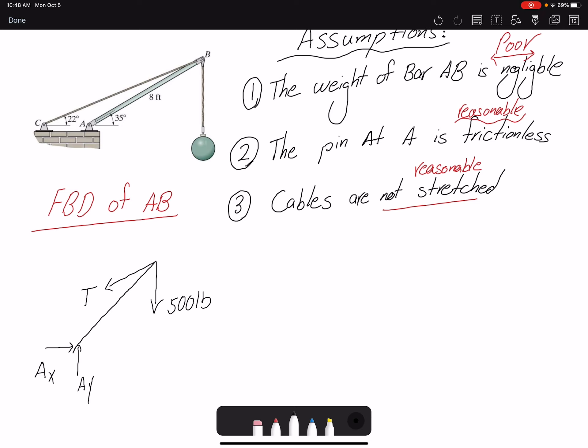So I'm going to write a moment equation about point A, then I'll find the tension. So the angle that I have here is 35 degrees, and the angle that this tension is making would be 22 degrees. That means that this angle is 22 degrees as well.